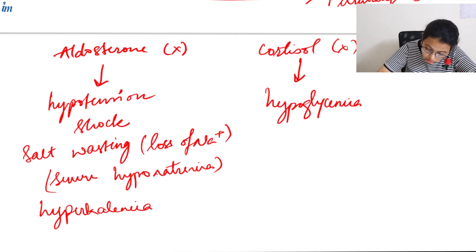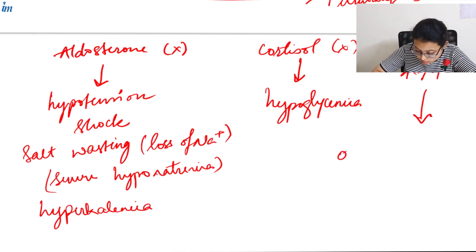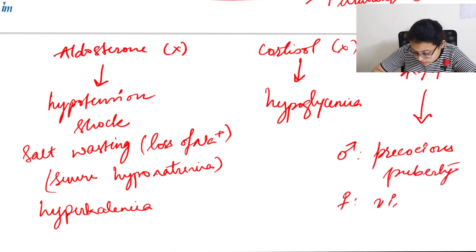Testosterone is produced continuously under the effect of ACTH. If it's a male child, he will suffer from precocious puberty. If it's a female child, you will see virilization—ambiguous genitalia.